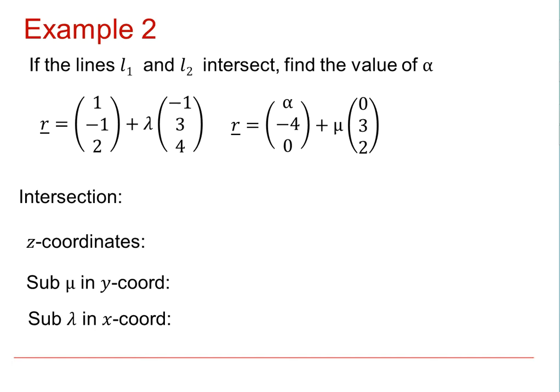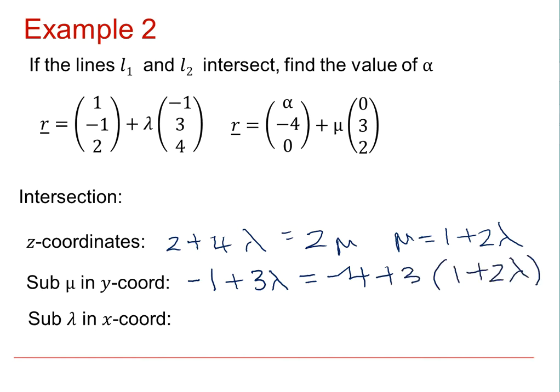Looking then at the z coordinates, we can see that 2 plus 4 lambda must equal 2 mu. And this gives us the substitution that mu equals 1 plus 2 lambda. If we use this in the y coordinates, we'll find that minus 1 plus 3 lambda must equal minus 4 plus 3 times 1 plus 2 lambda.